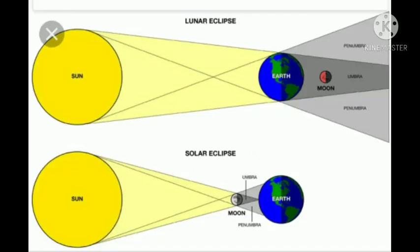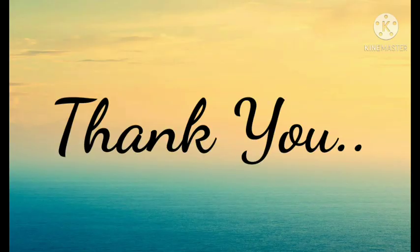These are the two types of eclipse. First is the lunar eclipse, second is the solar eclipse. The difference is that in lunar eclipse the earth is between the sun and the moon, and in solar eclipse the moon is between the sun and the earth. With this, the 12th chapter moon and shadow is completed. Thank you.